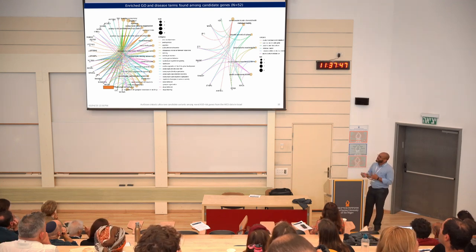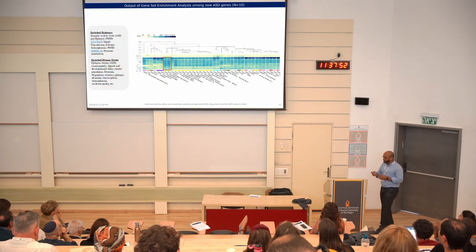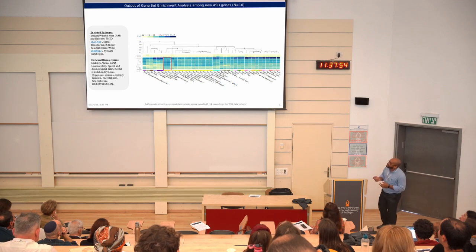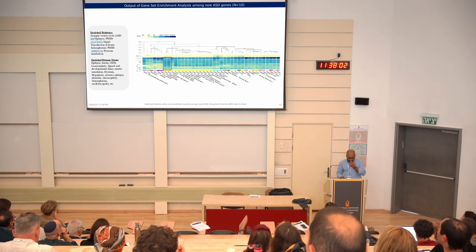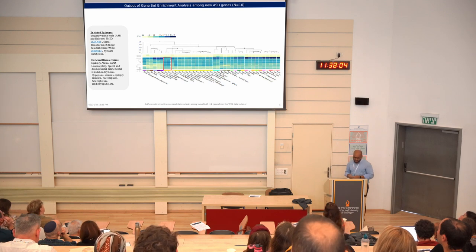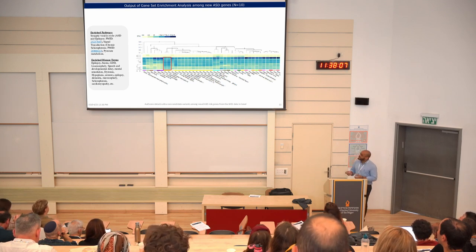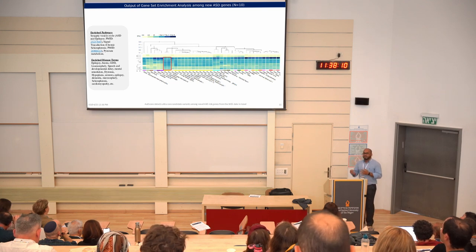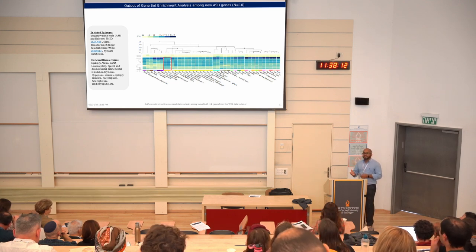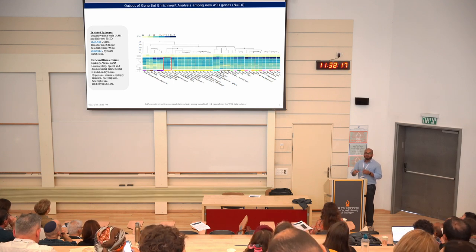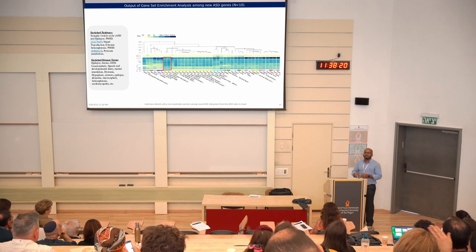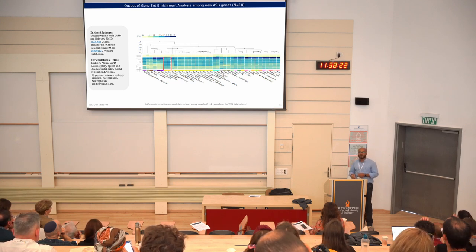We ran a separate analysis on only the new genes and found some pathways related to autism: the synaptic vesicle pathway, which is related to ASD and epilepsy, and signal transduction, which is also relevant for schizophrenia. The disease terms also overlap with autism-related disorders, and that suggests a high pleiotropic effect — meaning one kind of variant in a specific gene can influence many other phenotypes.